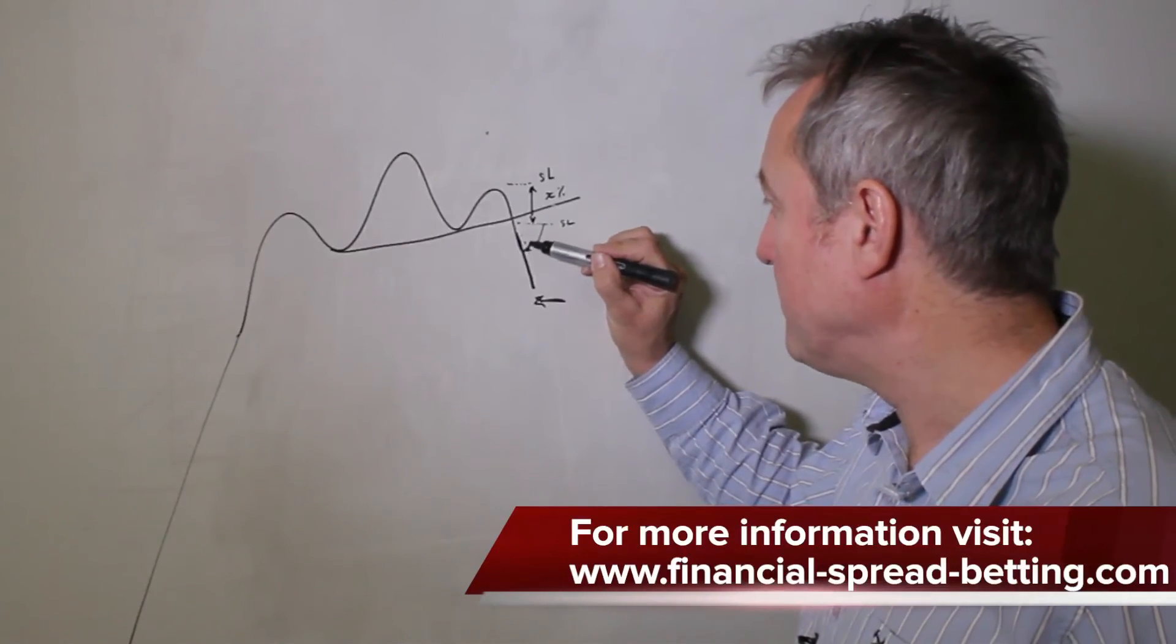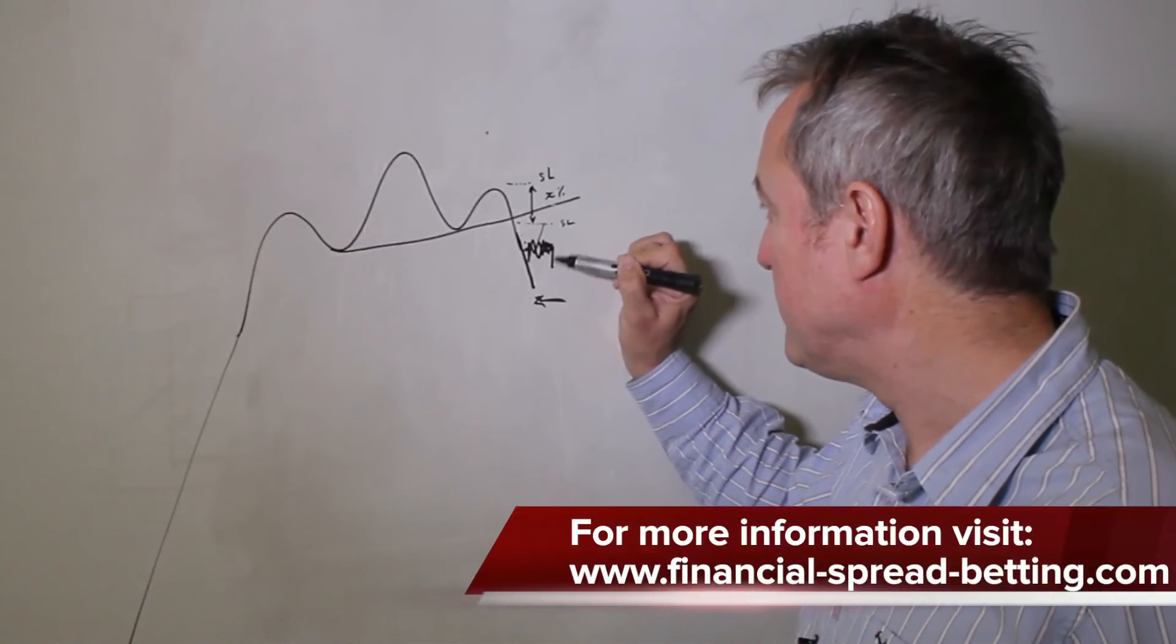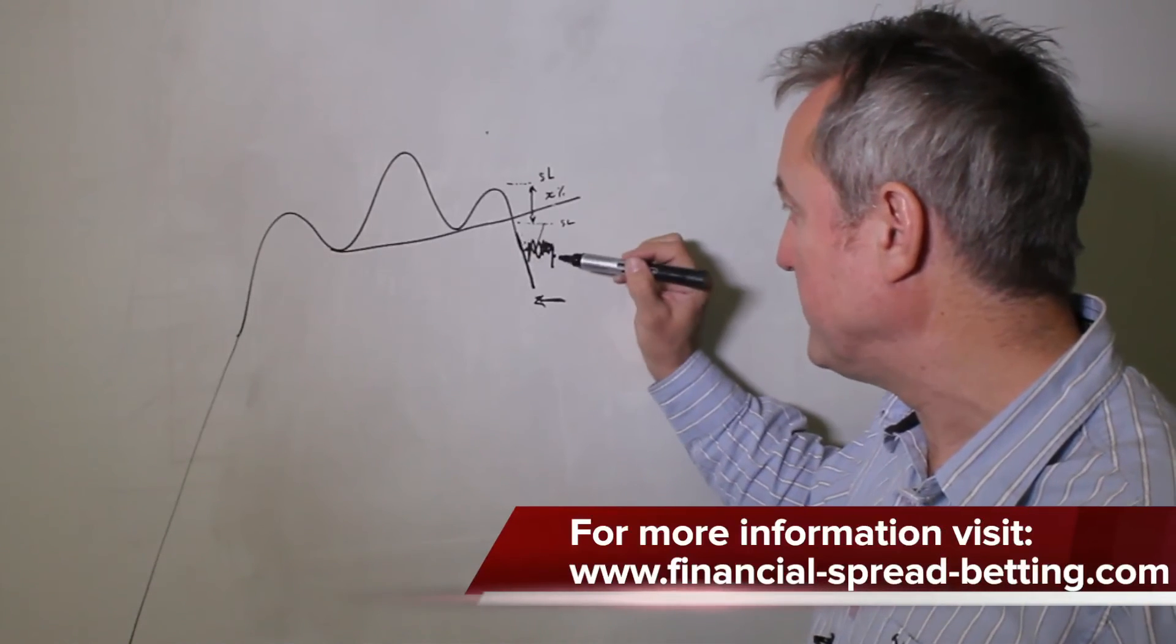So for example, if you have a triangle here, then you might want to add on to, you might not want to add on there, you might want to add on there.